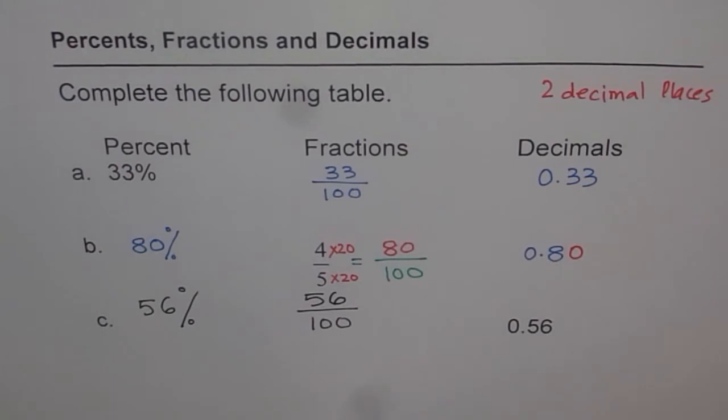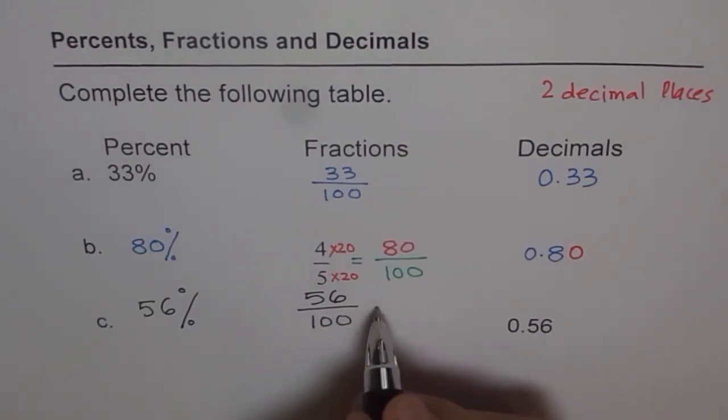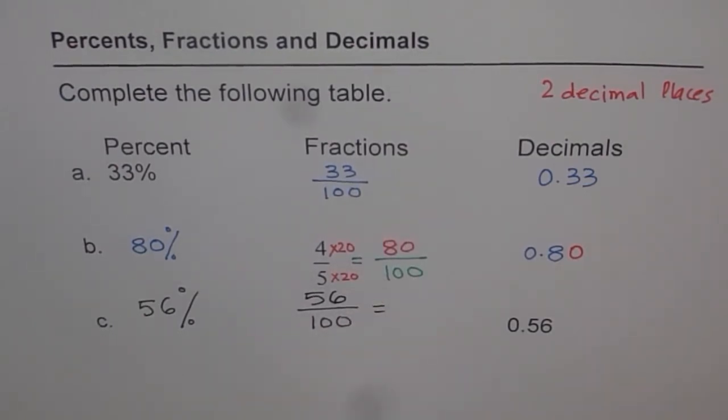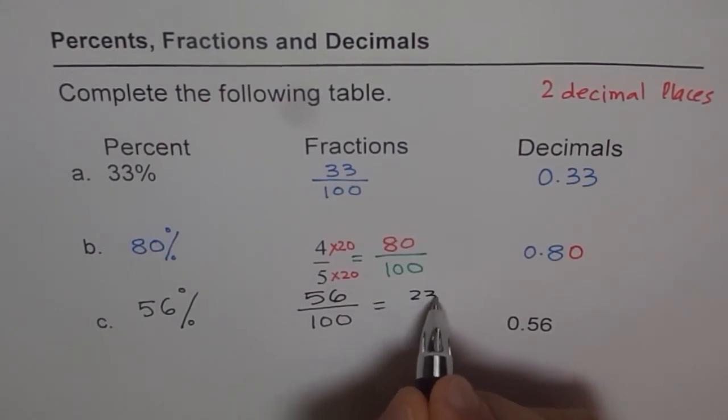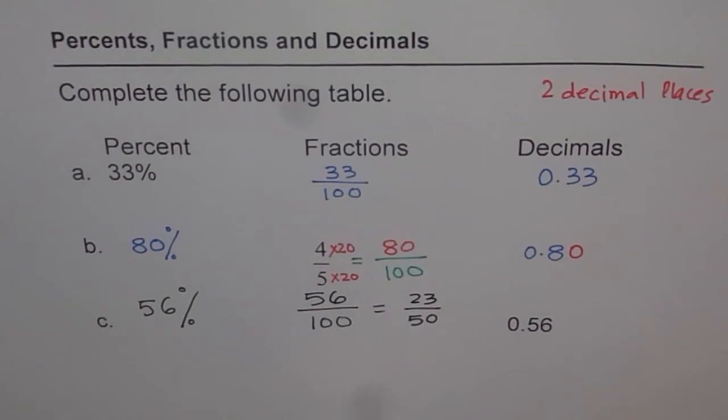At times you may be required to reduce this - well not in this particular case, but you may be required. Since both are even numbers, you can divide by 2 and then write this as 28 over 50. That's not a must - 56 over 100 was good enough when we are converting 0.56 to fractions.